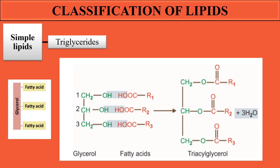Let's see the structure of triglycerides. As the name indicates, triglyceride means it consists of three fatty acids. In the triglyceride structure, three fatty acids are attached to the glycerol — in this case, the alcohol is glycerol. These fatty acids are attached to the glycerol through ester bond formation, which occurs between the hydrogen of the glycerol and the hydroxyl group of the fatty acids.